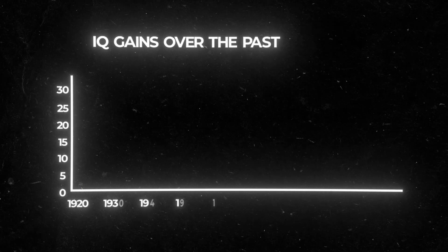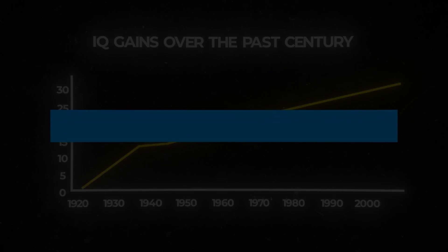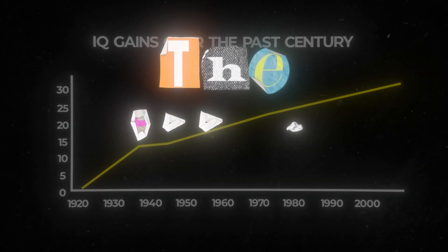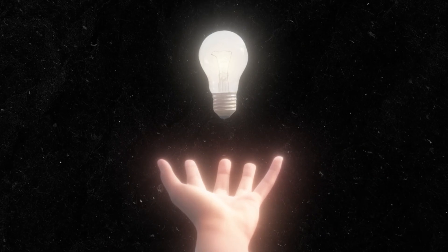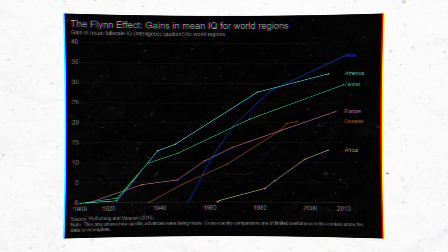For years, researchers have seen IQ tests shoot up into the moon, and they've been left with the question, are humans getting smarter? This is something known as the Flynn effect, but what's it attributed to, and are we really getting smarter, or is there something wrong with the data?